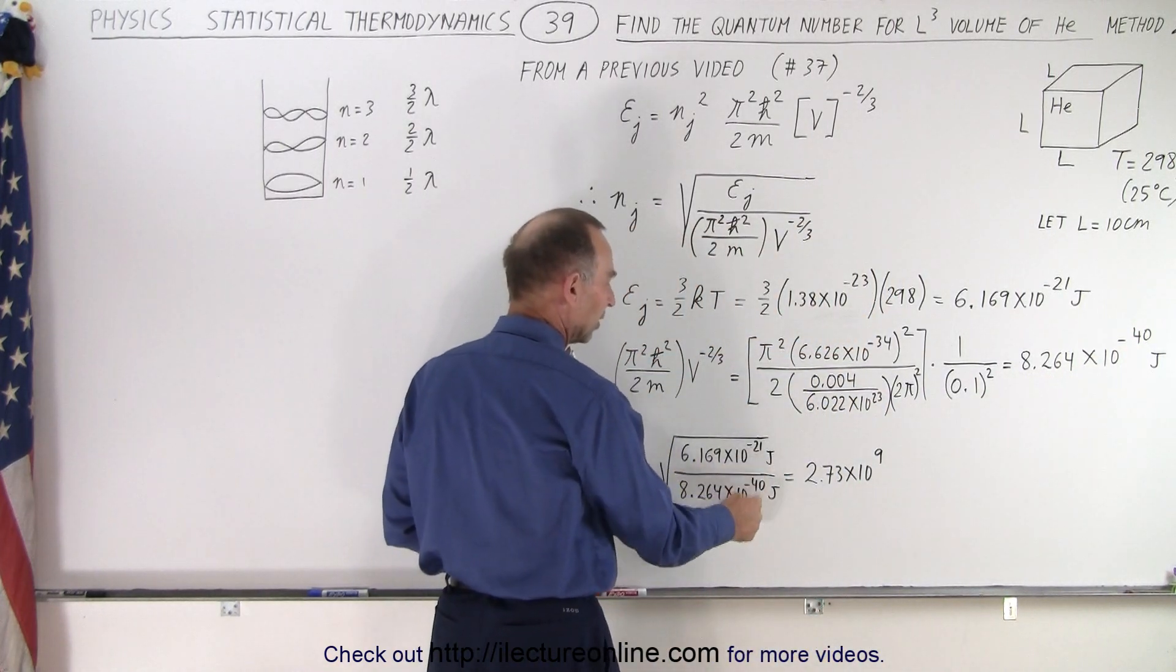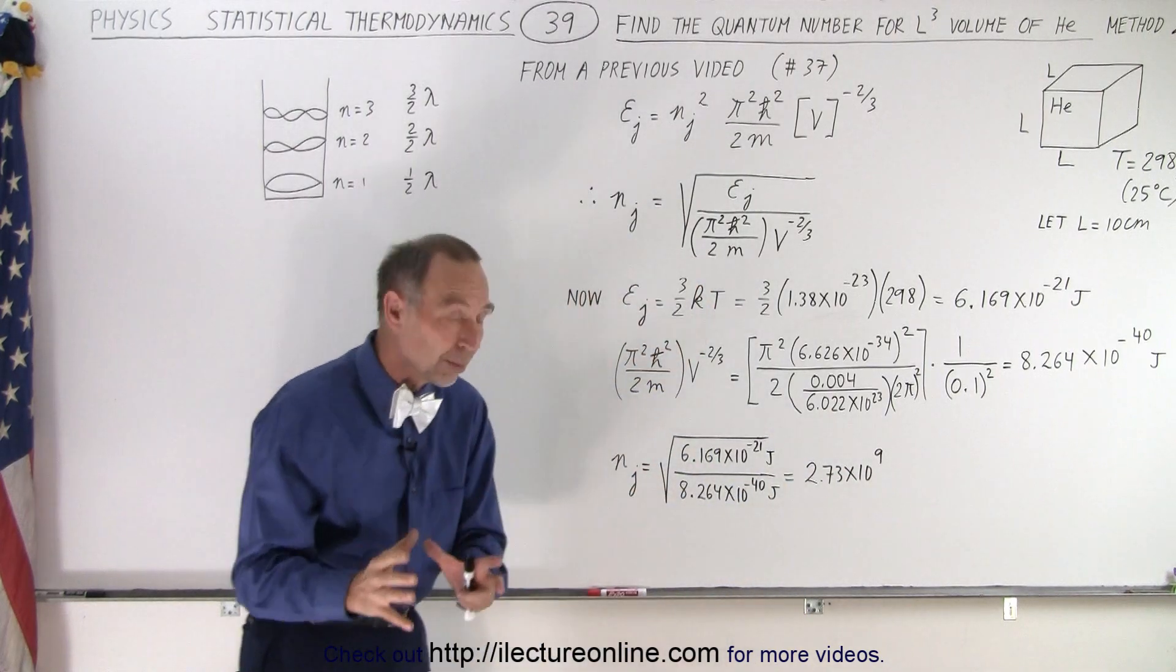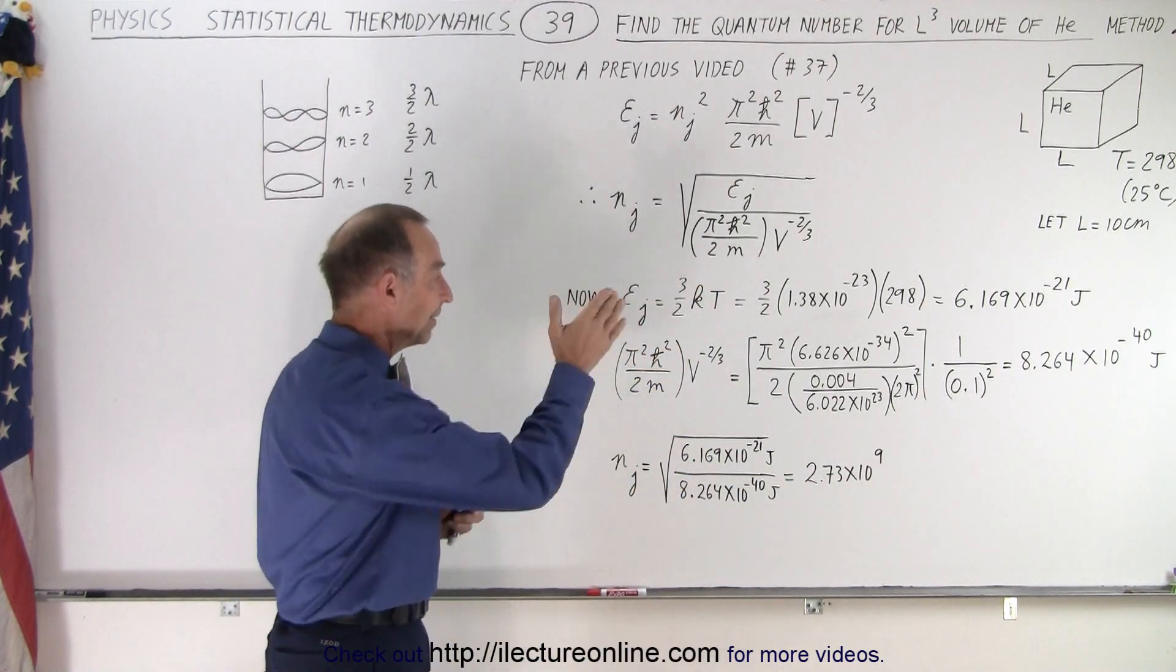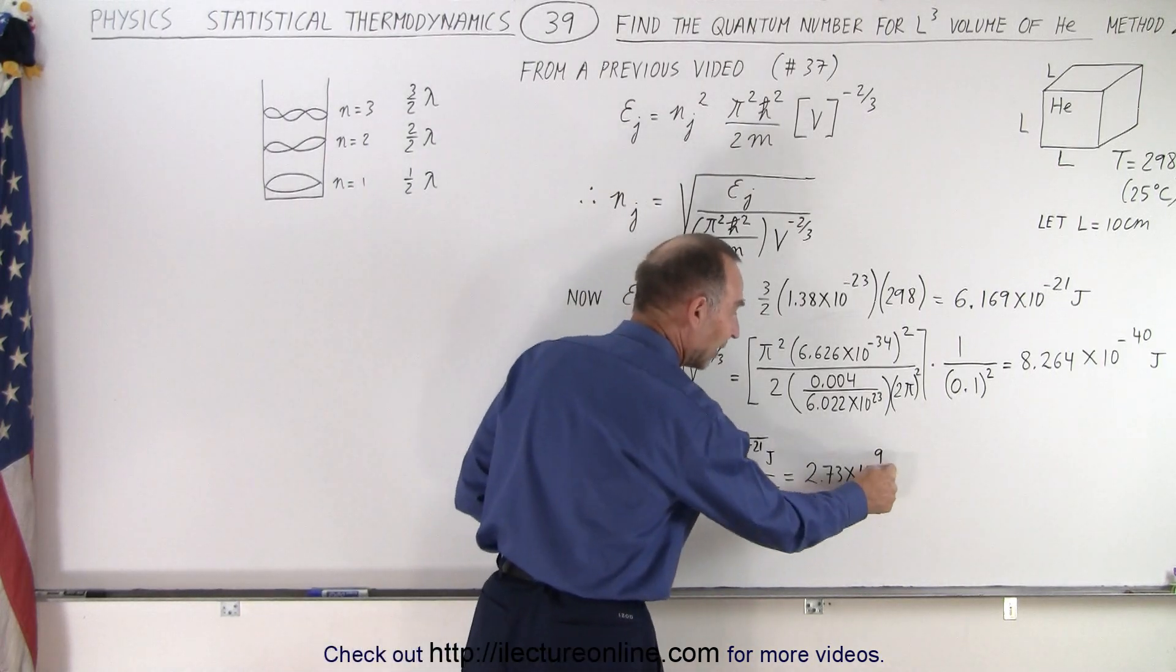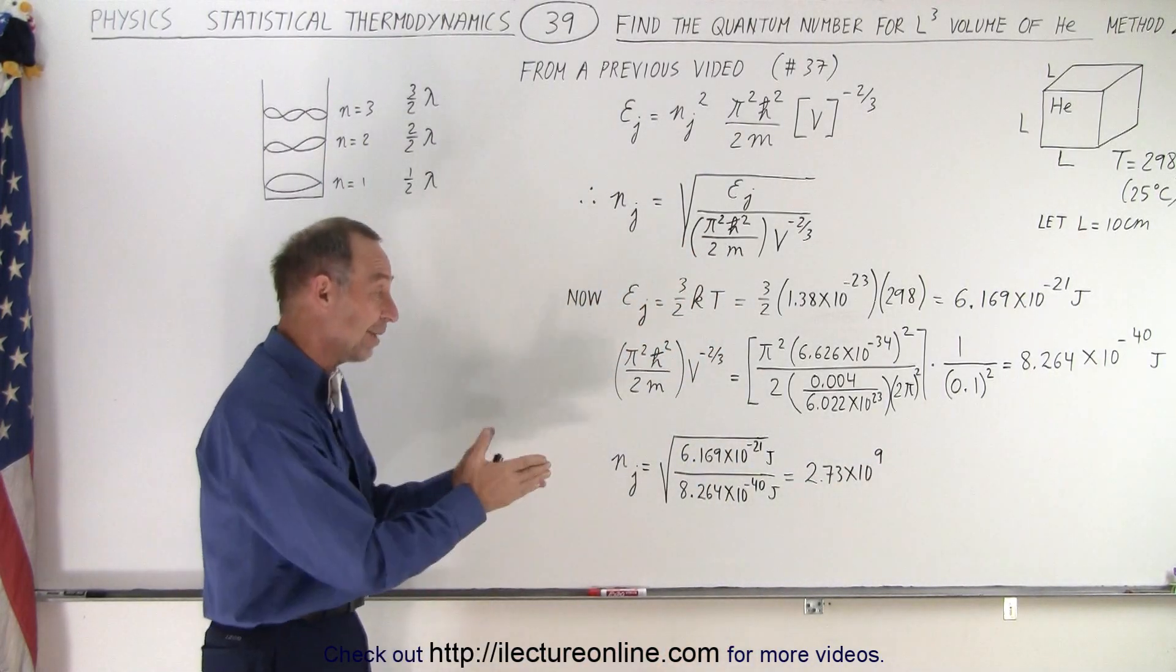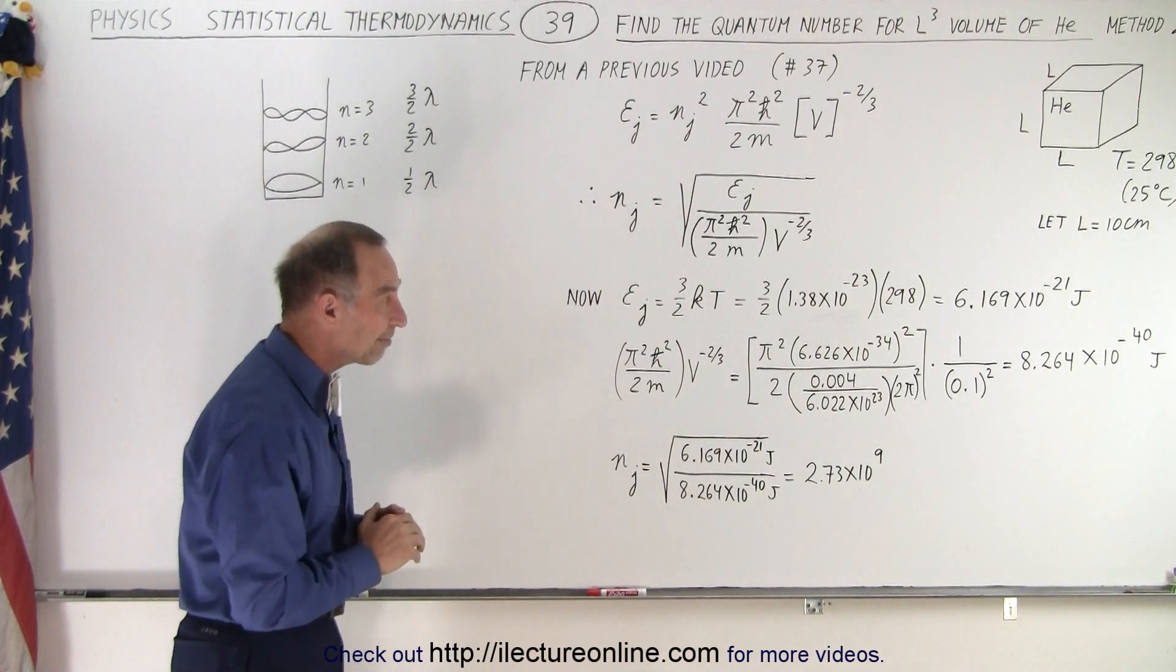We then divide the numerator by the denominator, take the square root, and we get this result as the quantum number of the helium atom inside that box at room temperature: 2.73 times 10 to the 9. And if you go back to the previous video, you'll find out we got the exact same result using the de Broglie wavelength.